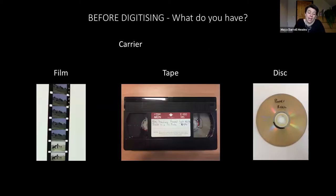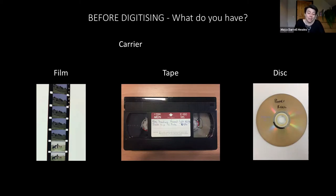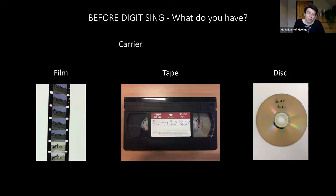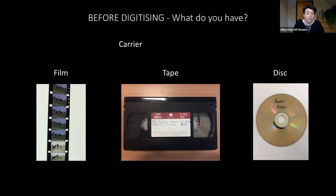Carriers are the way the images and sounds are stored and conveyed to us. We have celluloid film strips, which can carry sounds and images together and separately. Magnetic tape can also carry images or sounds, and you might find this in cassettes such as VHS or Betacam, but also on open reel. CDs and DVDs actually carry digital media material, but because CD and DVD drives are less common now, you should also consider migrating this material to other storage systems.